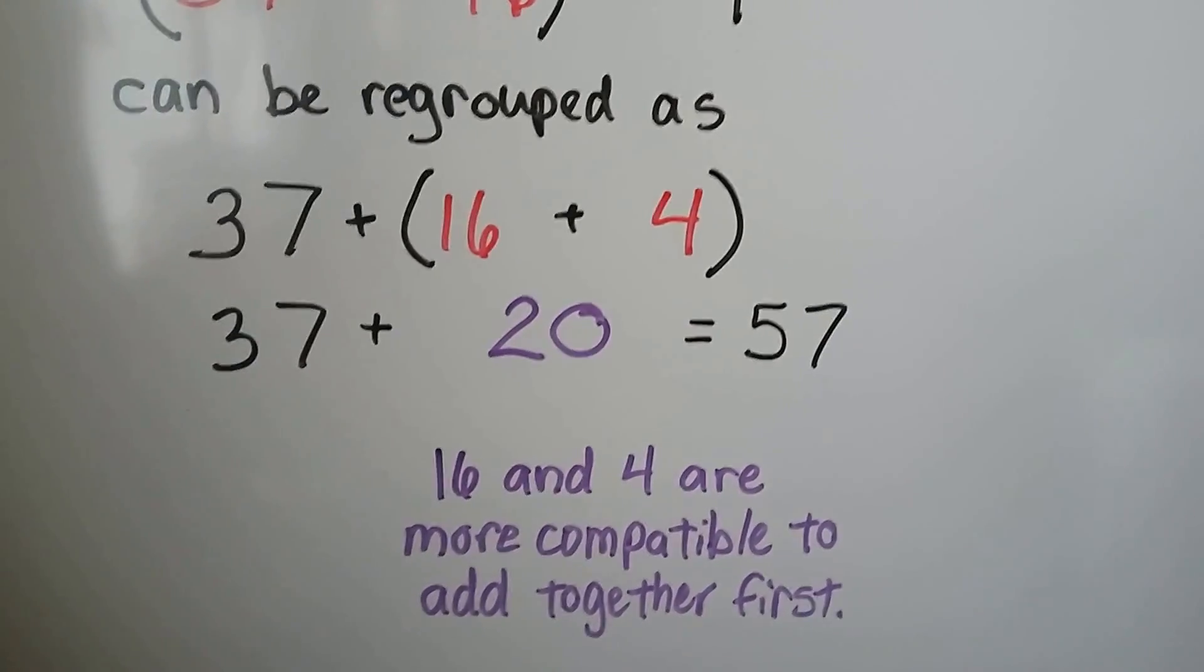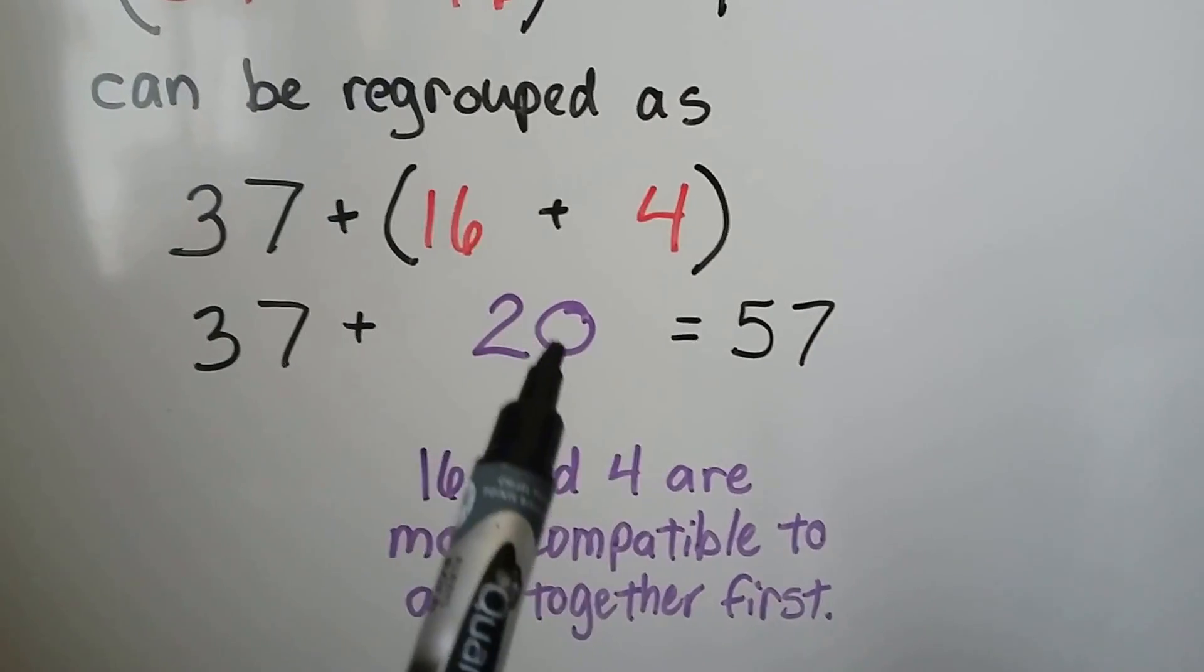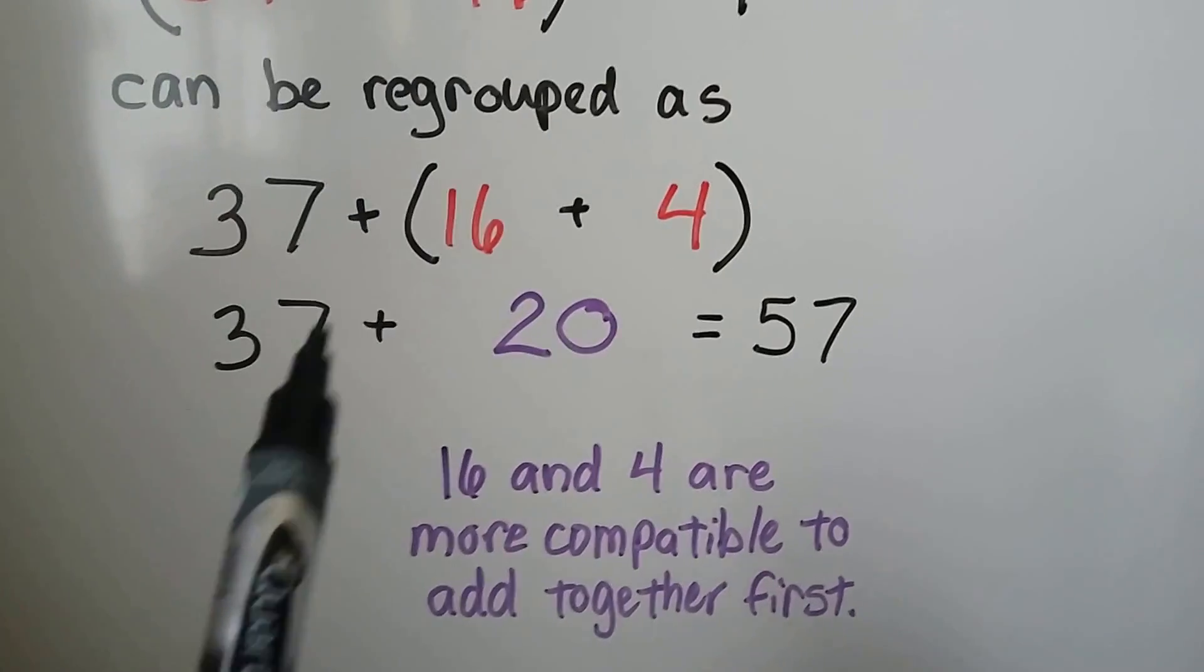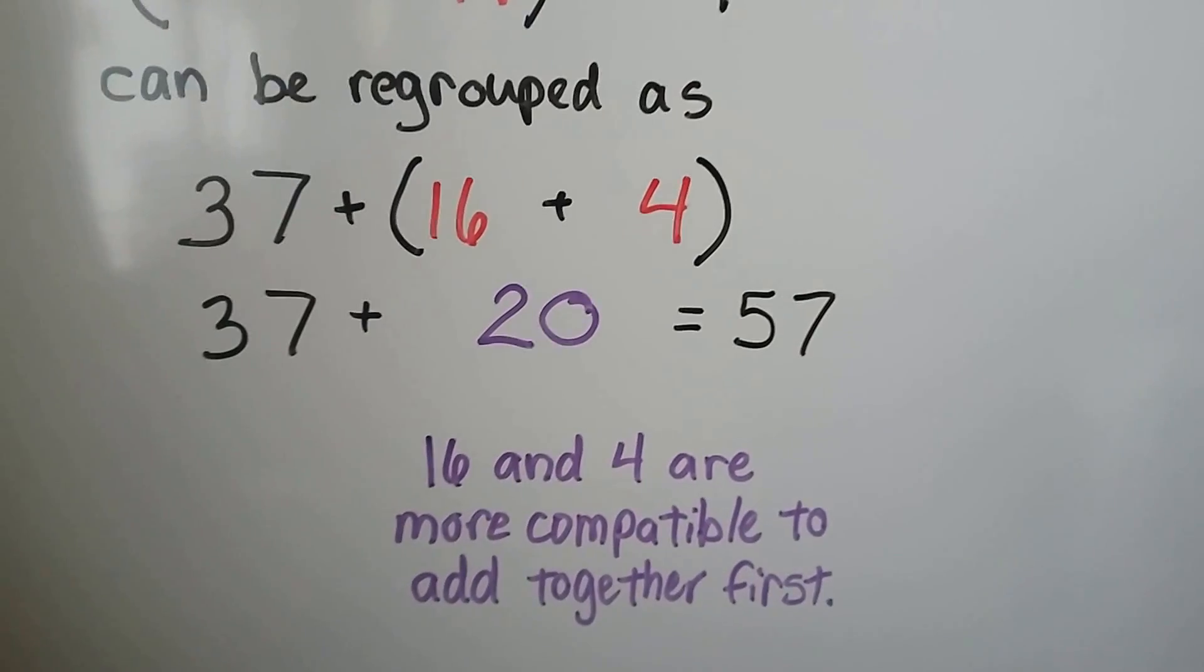16 and 4 are more compatible to add together first. We're going to get a 20. Then we can add the 37. We can do mental math, and that's 57.